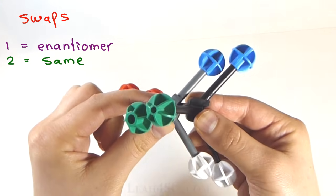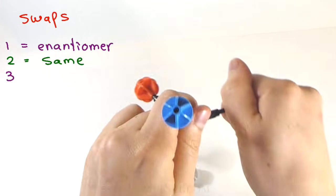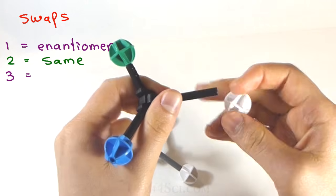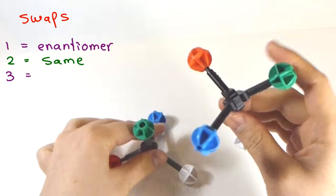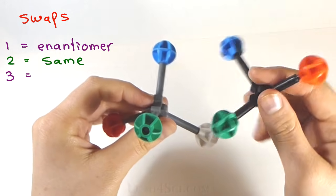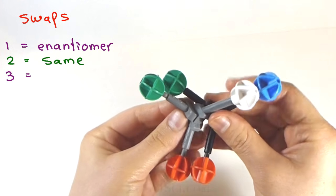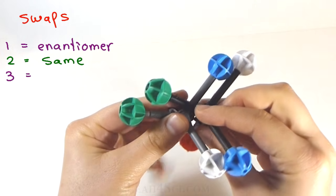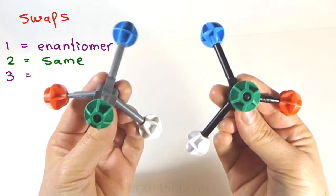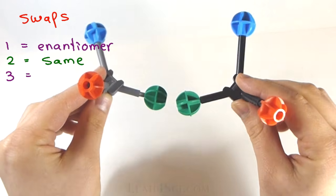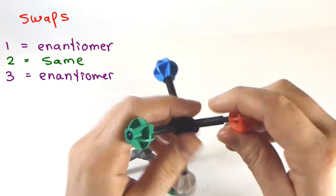Two swaps brought us back to the initial chirality. Let's put our reference down and we'll randomly do a third swap. As I do this, I want you to predict what we're going to see. One swap gave us the enantiomer, two gave us the same thing, three swaps, well can we superimpose them? Looks like we can't. Red and green are lined up, blue and white are not but if we try to put a mirror between them, they're perfect mirror images of each other. So three swaps gave us an enantiomer.